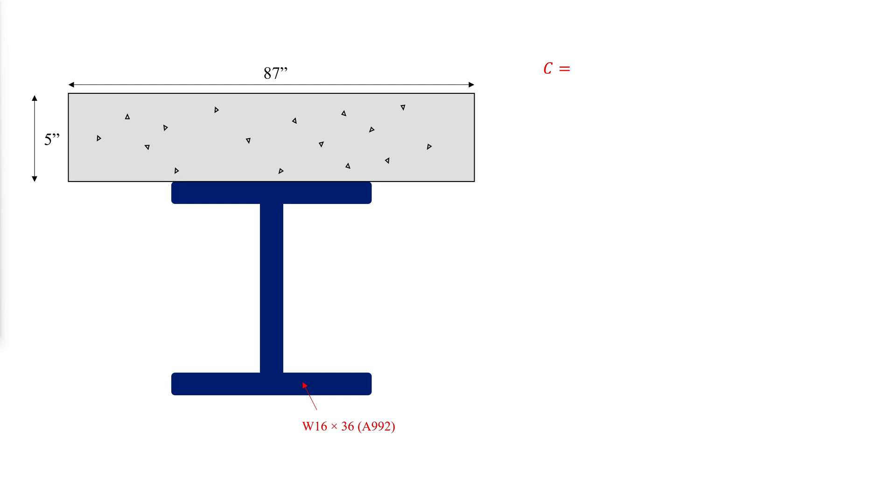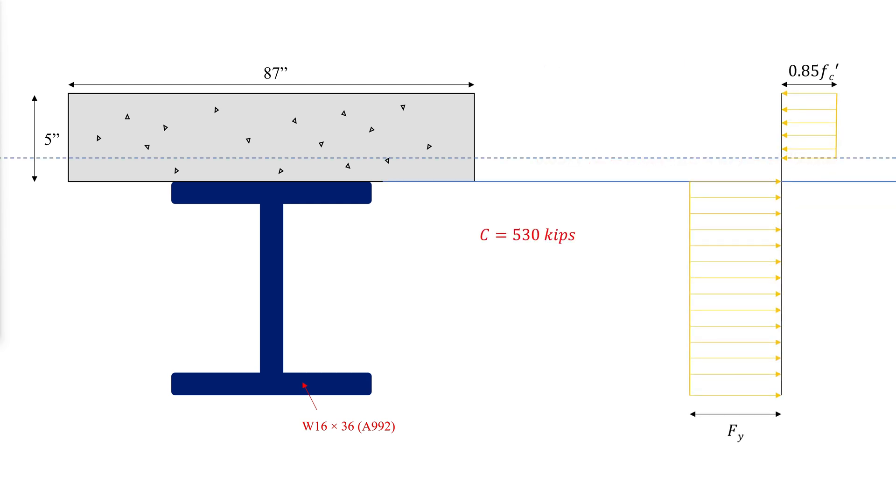To start, we will determine the compressive force C in the concrete, which will be the smaller of the following two cases. The steel strength is smaller and therefore will control. This means that the full depth of the slab is not needed to develop the required compression force.